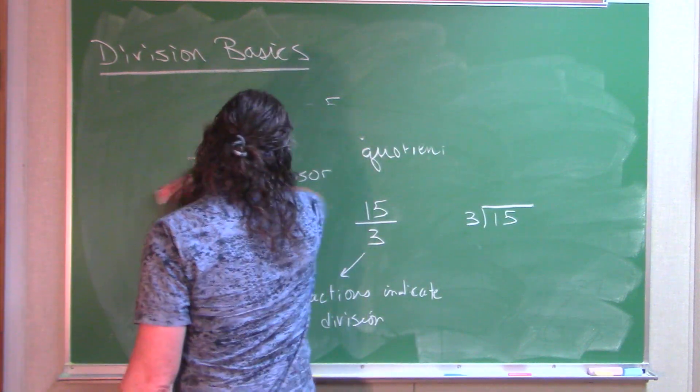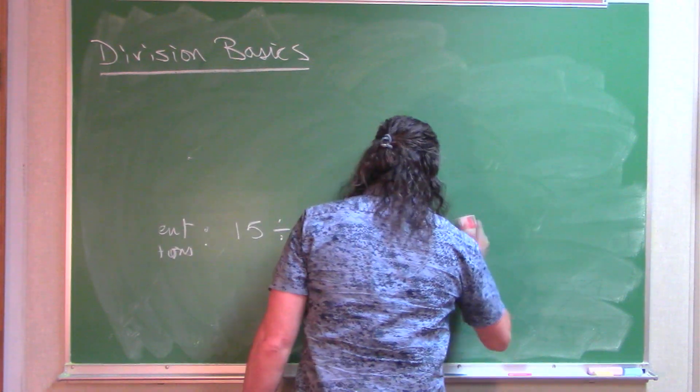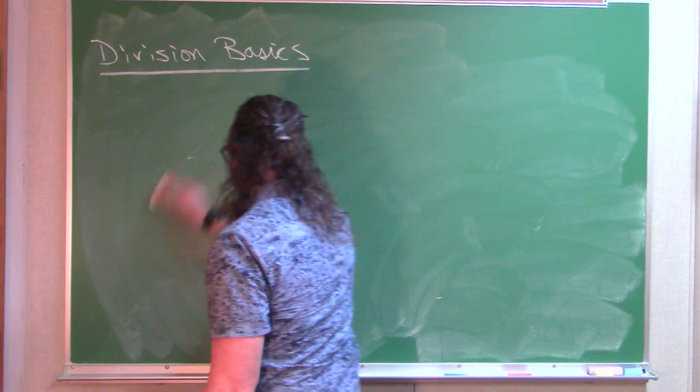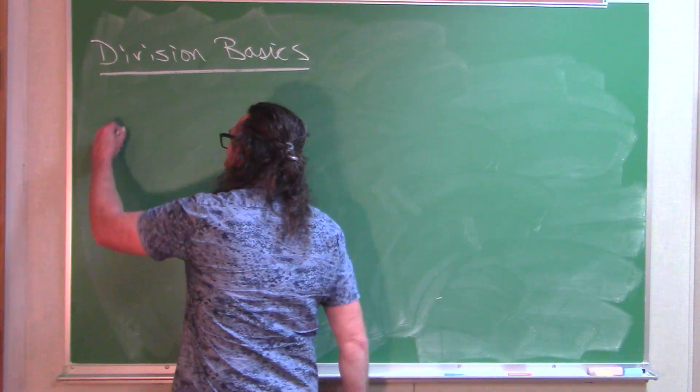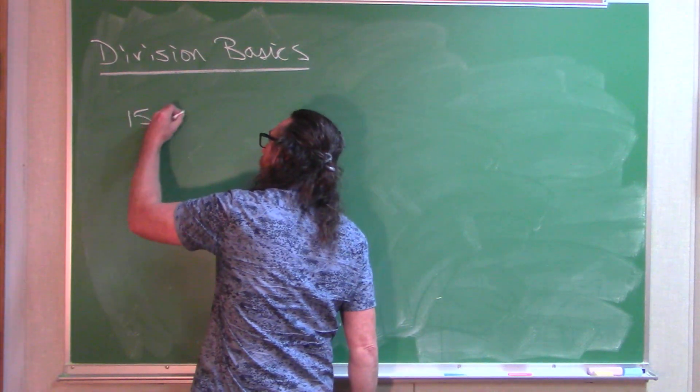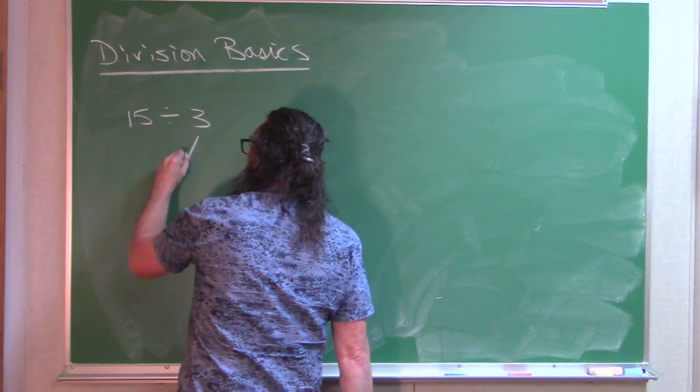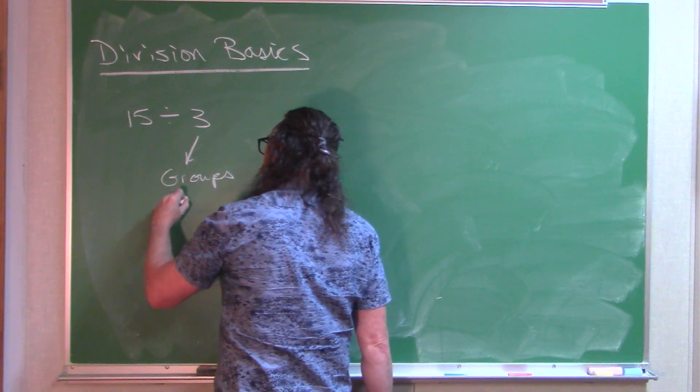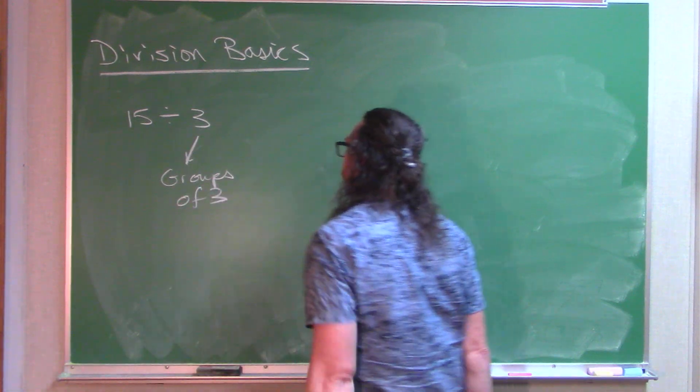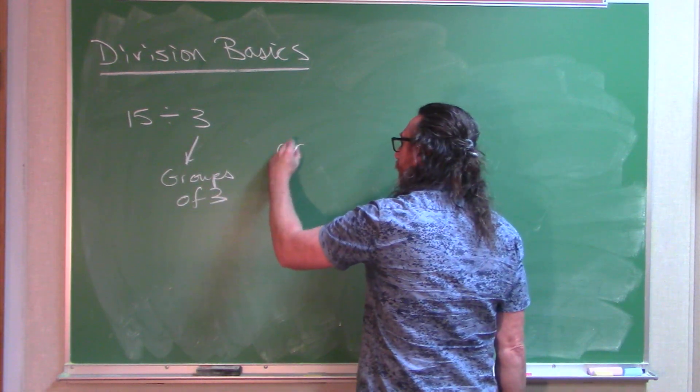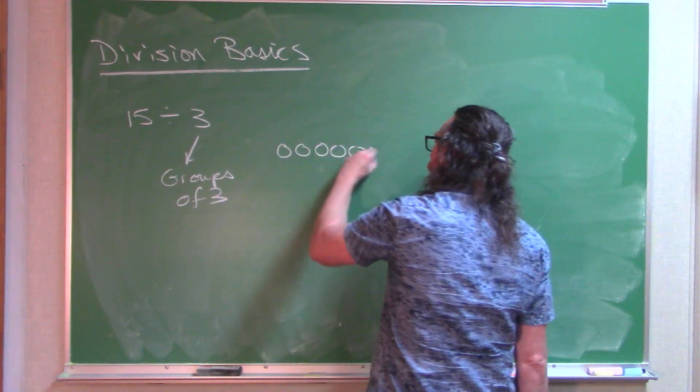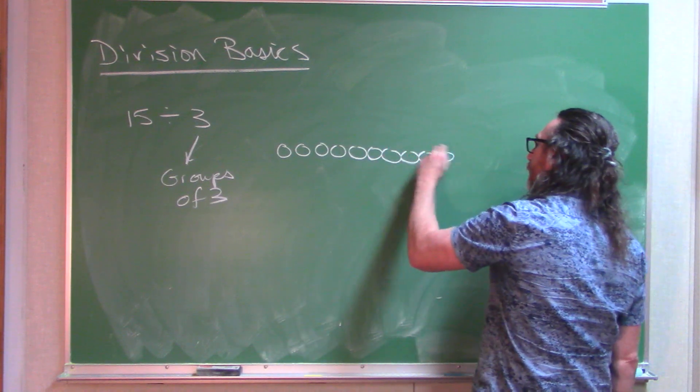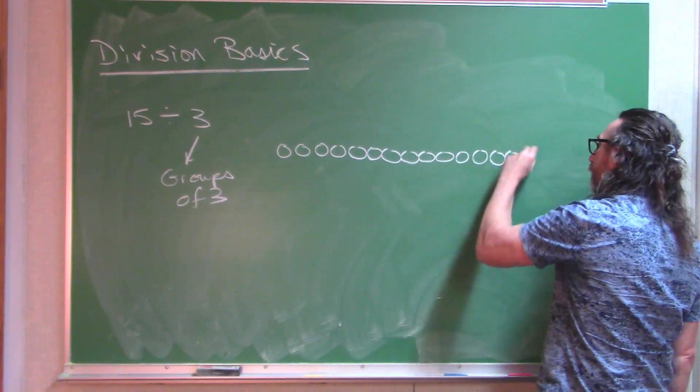So if we were to continue talking about this 15 divided by 3 example, one way to think about 15 divided by 3 is we are breaking 15 up into groups of 3. So if I have 1, 2, 3, 4, 5, 6, 7, 8, 9, 10, 11, 12, 13, 14, 15.